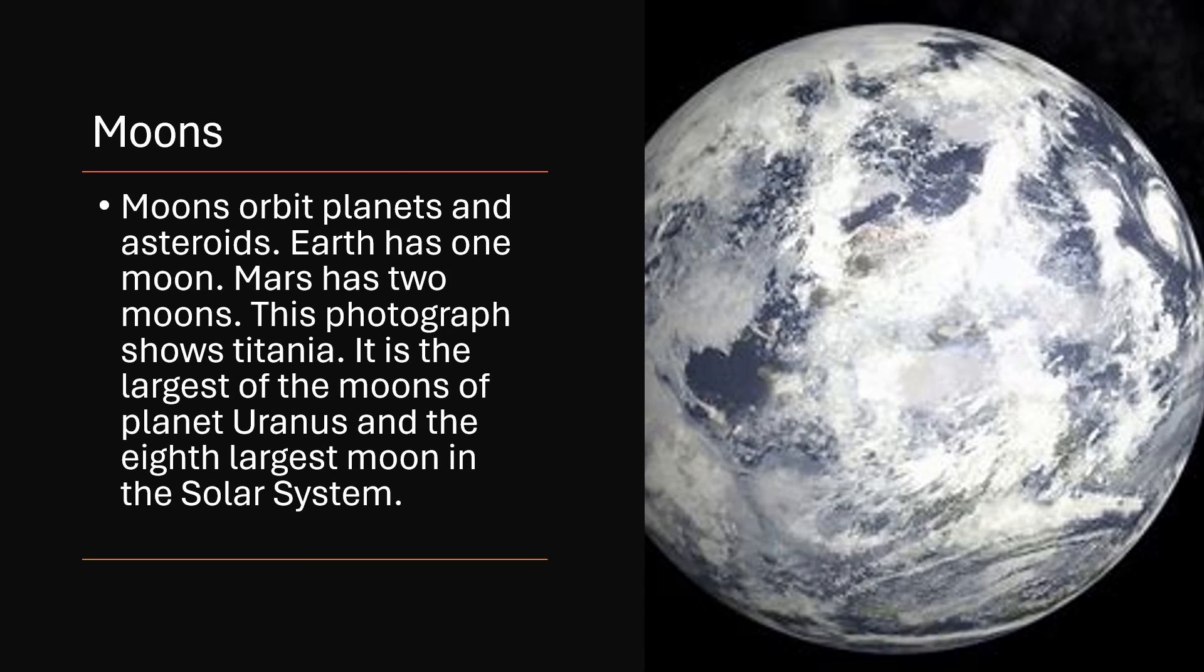Moons: Moons orbit planets and asteroids. Earth has one moon. Mars has two moons. This photograph shows Titania. It is the largest of the moons of planet Uranus and the 8th largest moon in the solar system.